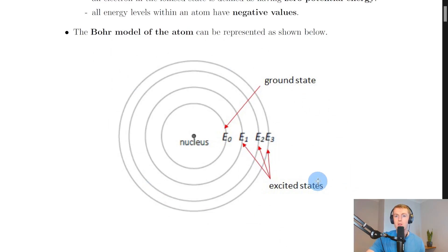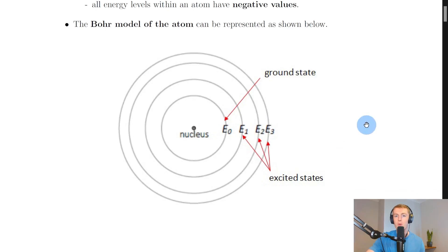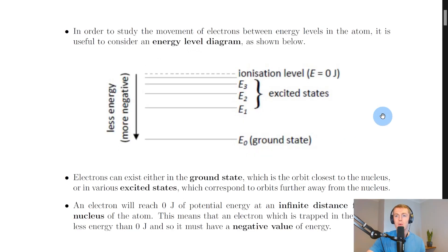In the features of the Bohr model we said that electrons can be excited from one energy level to a higher energy level, so an electron in say E1 could be excited to E2 or E3. Electrons could also lose energy and drop down an energy level. Remember, the energy of the electrons is quantized, which basically just means electrons can only occupy these certain energy levels — electrons cannot exist in between these energy levels.